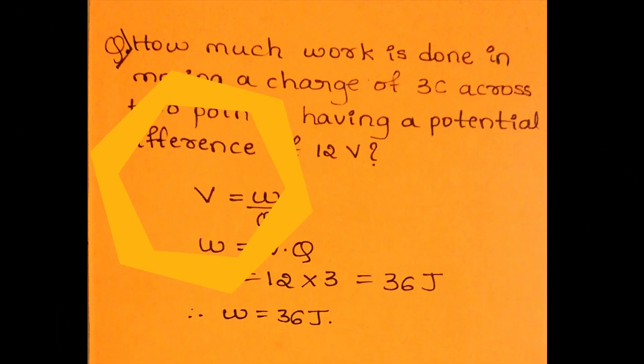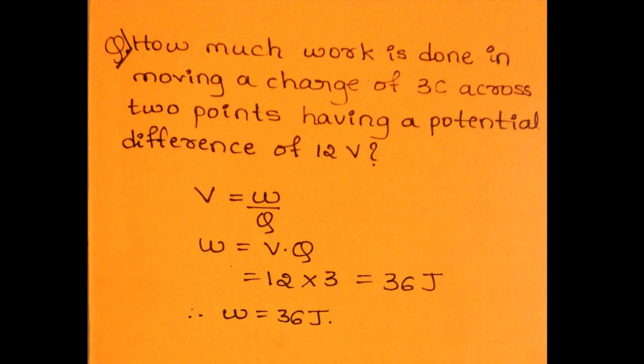Let us understand this concept by solving an example. We need to find the work done in moving a charge of 3 coulombs across two points having a potential difference of 12 volts. We know that electric potential equals work done upon charge, so work done equals potential difference into charge. Potential difference given is 12 volts and charge is 3 coulombs. On multiplying these two, we get work done equal to 36 joules.